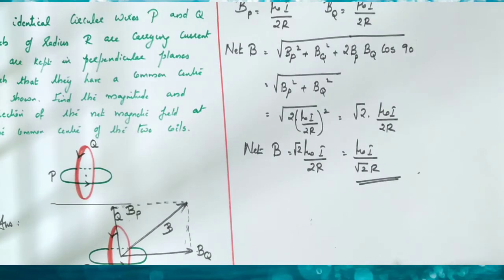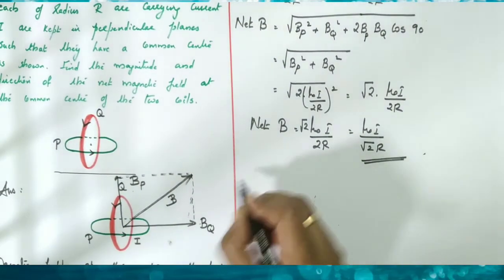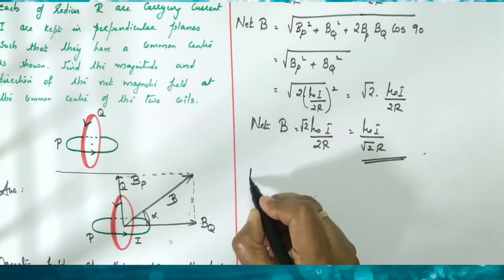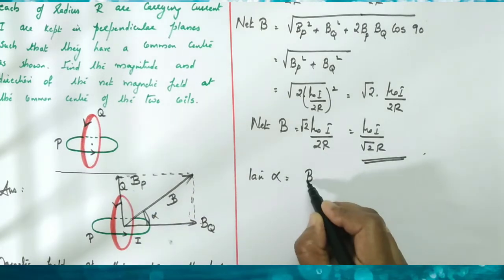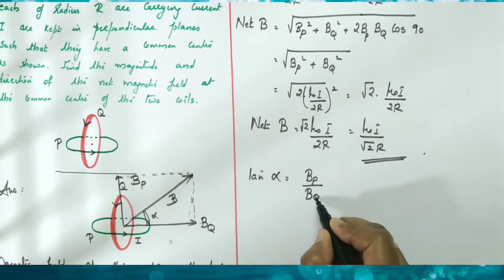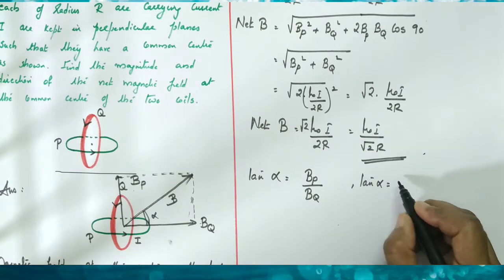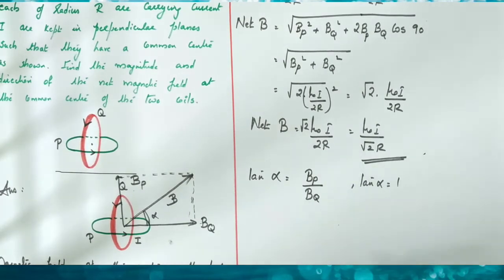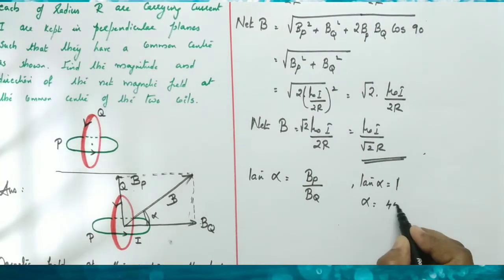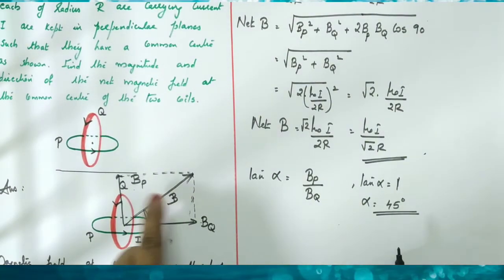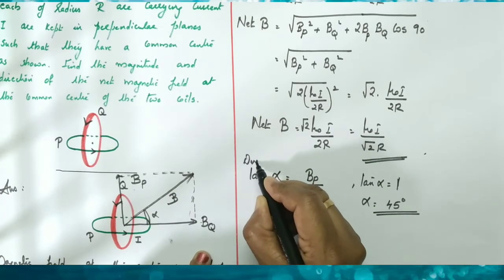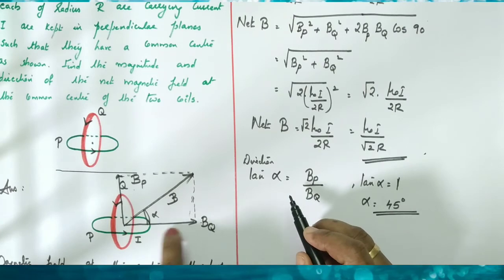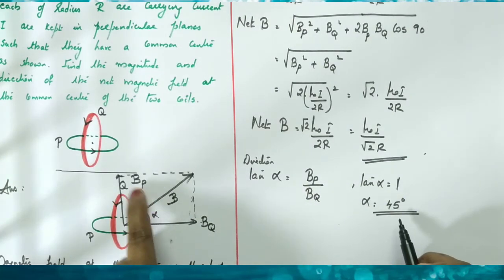The direction of the resultant magnetic field is given by tan α equals opposite side divided by adjacent side, which is BP divided by BQ. Since BP and BQ are equal, tan α equals 1, so α equals 45 degrees. Therefore, the resultant magnetic field is at 45 degrees from BP or from BQ.